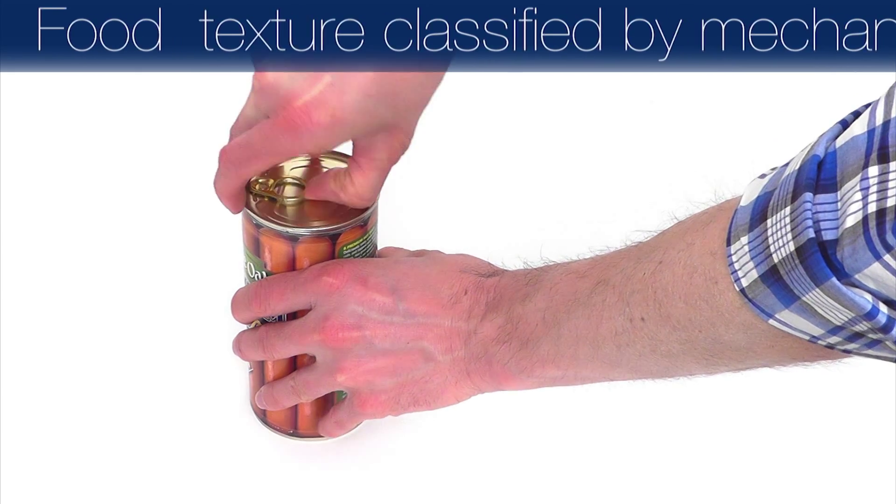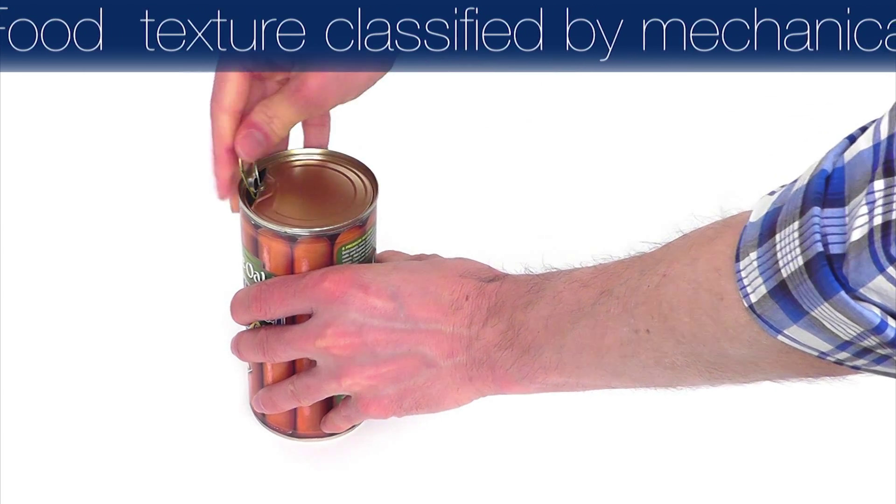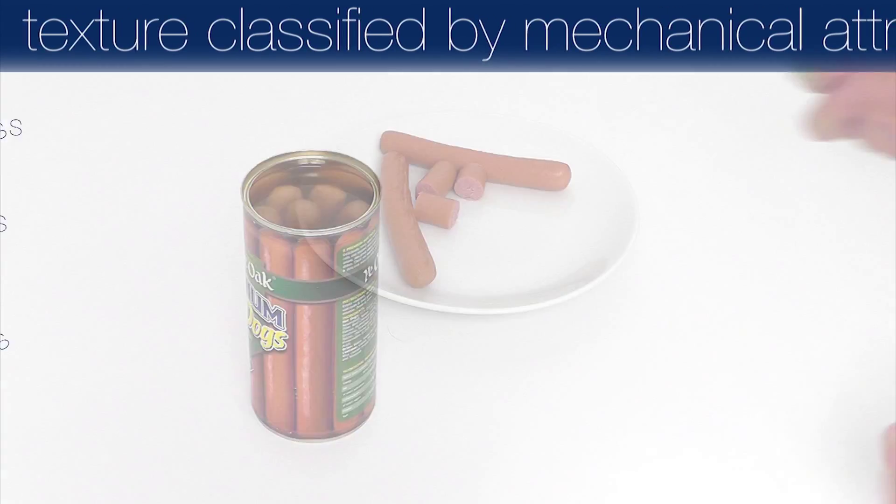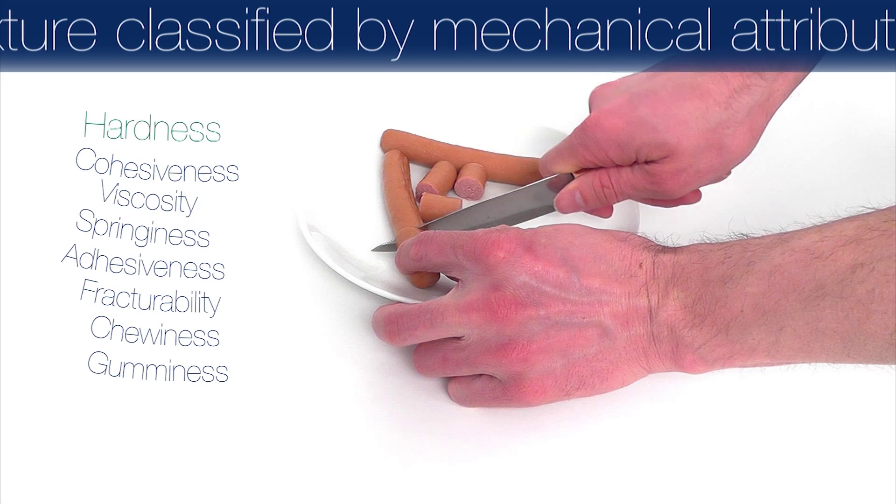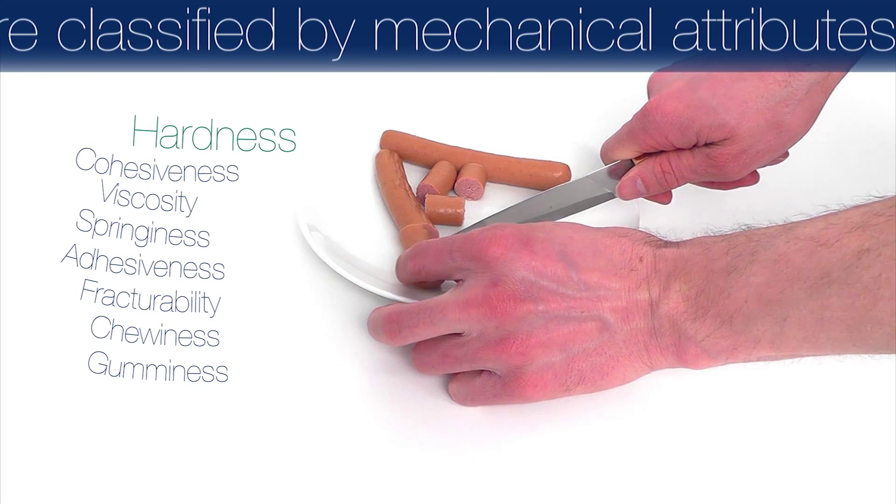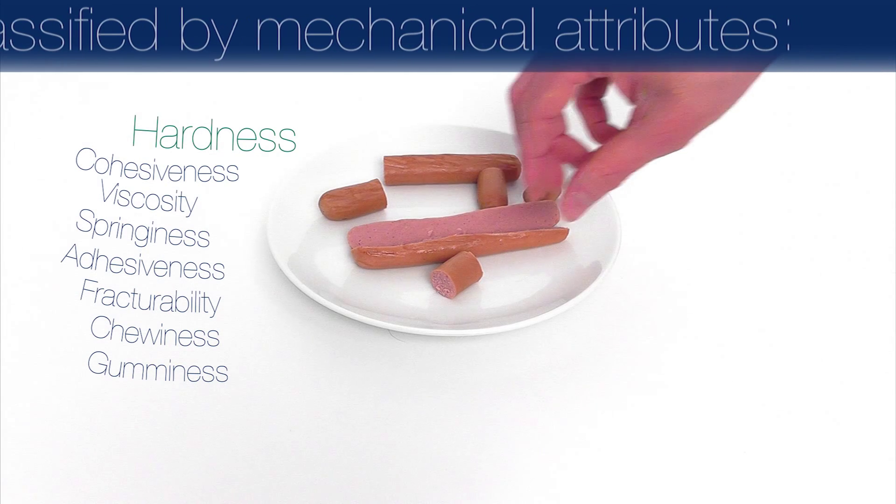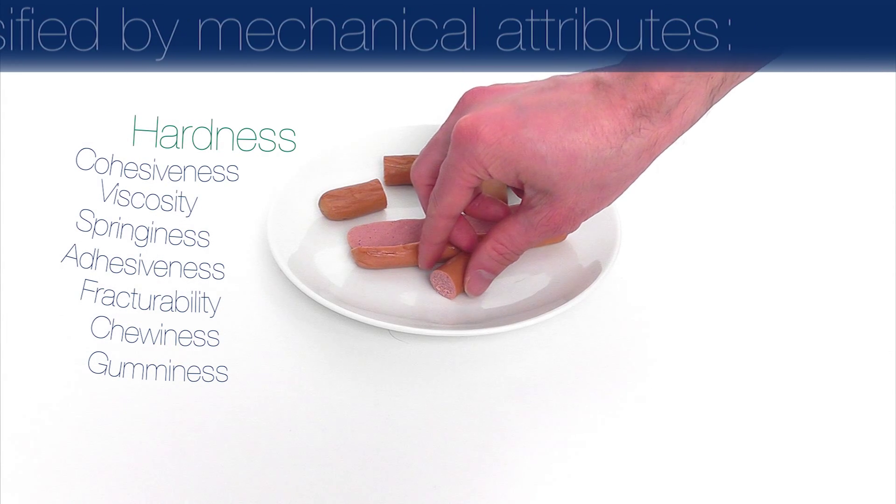The FTC texture analyzer can test hot dog sausages for their required cutting force. Food texture can be scientifically classified by a number of mechanical attributes: hardness, cohesiveness, viscosity, springiness, adhesiveness, fracturability, chewiness and gumminess.